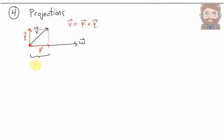So how can I determine the vector P? In other words, the projection of V onto W. Think of this as the amount of V that's pointing in the W direction.